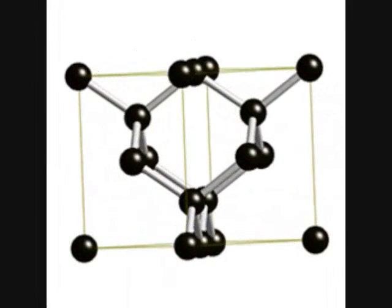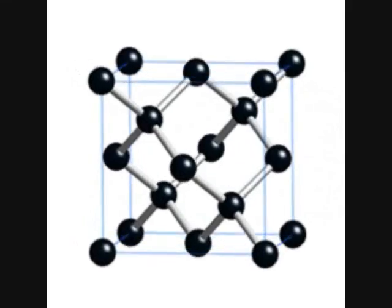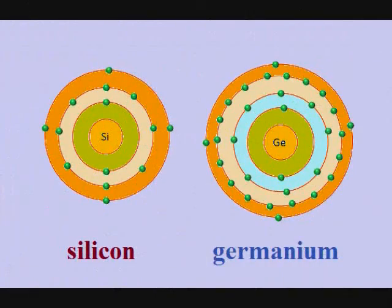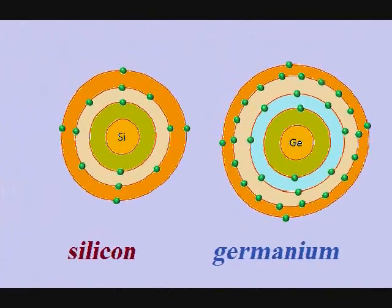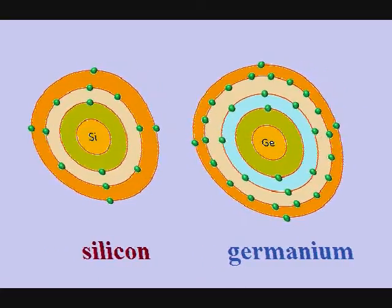Silicon and germanium are used effectively because they have four valence electrons in their outermost shell, which gives them the ability to gain or lose electrons simultaneously.